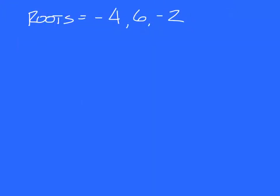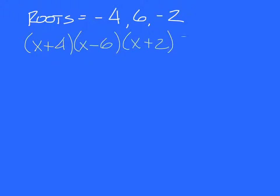You have three roots on this one, so it's going to be x plus 4, x minus 6, and x plus 2 equals 0. You reverse the sign to put them in the expression. Is there any question about how we come up with that?